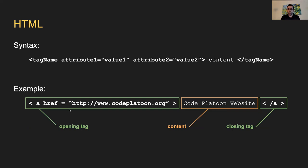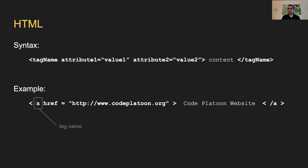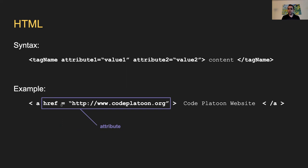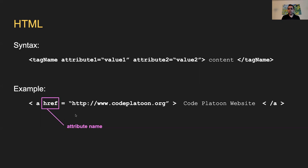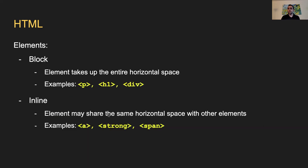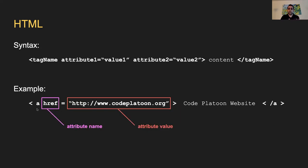We can break a tag down further. You always start with the tag name inside angle brackets - in this case 'A' for anchor tag. Then a tag can have attributes. An attribute has a name and a value: for instance, href is the attribute name, and the website location is the attribute value in quotes. Together, attribute name equals attribute value makes one complete attribute.